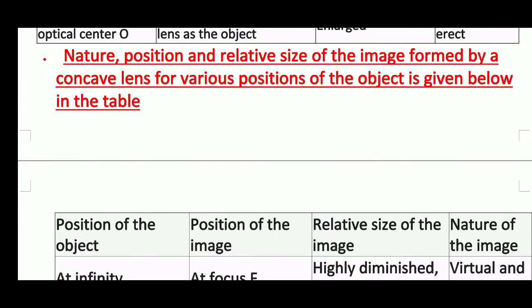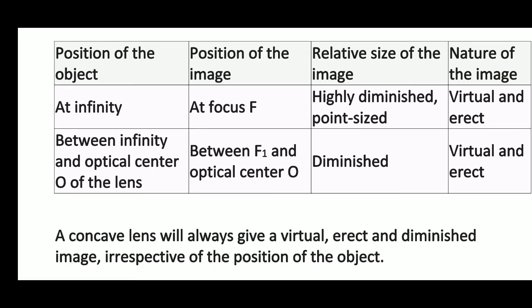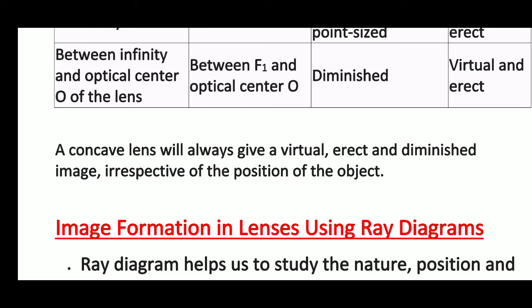Now we are going to discuss the nature, position, and relative size of the image formed by a concave lens for various positions of the object in tabular form. There are only two situations. First, when the object is at infinity, the image will be at focus, highly diminished or point-sized, virtual and erect. Second, when the object is between infinity and optical center O, the image will be between f1 and optical center O, diminished, virtual, and erect. A concave lens will always give a virtual, erect, and diminished image irrespective of the position of the object.